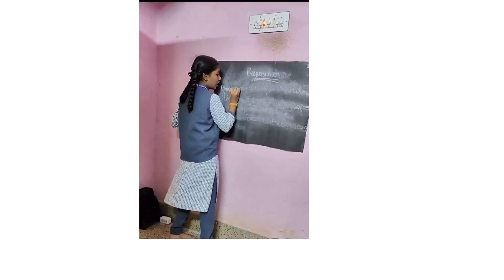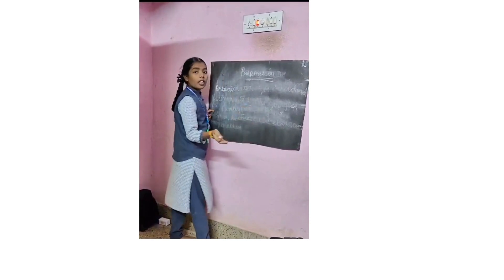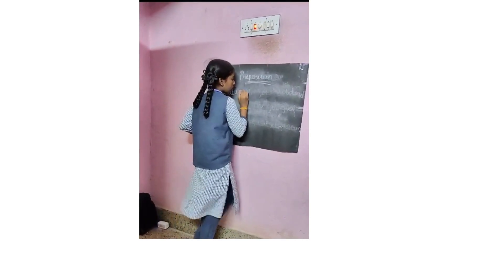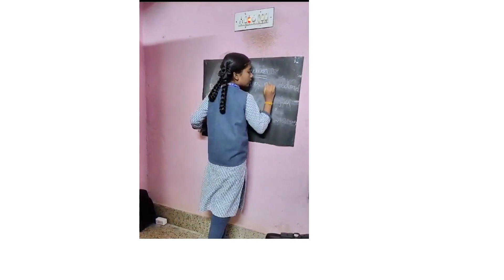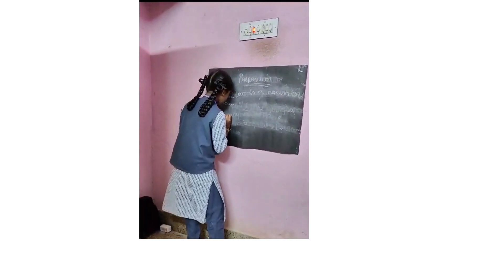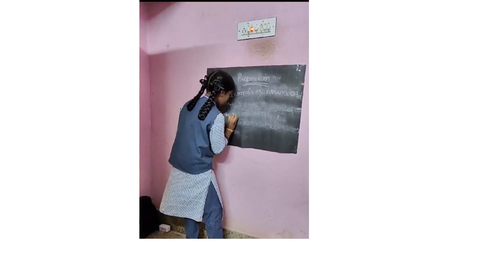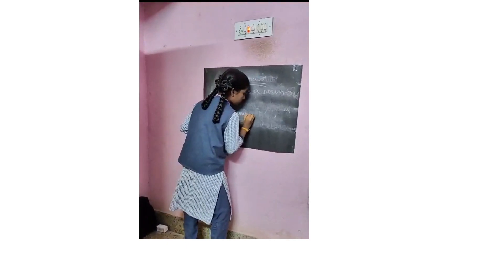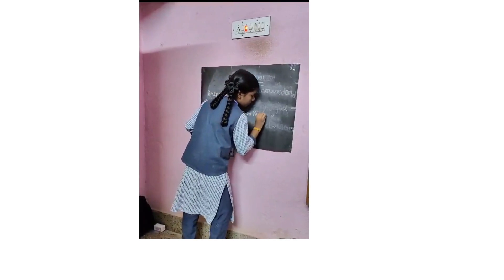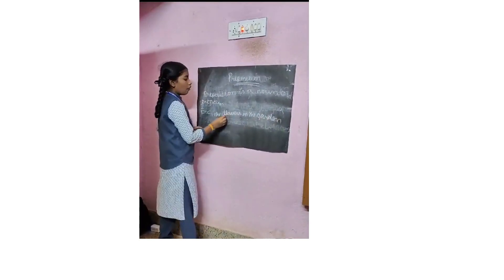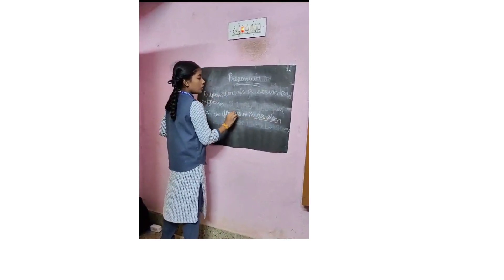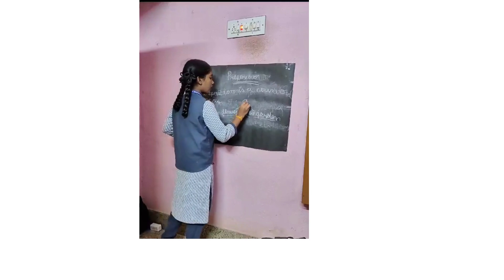Today we are talking about Preposition. The preposition is related to a noun. For example, the flower is in the garden. The flower is here and the garden is here. So, the word connecting them is 'in'. So, in is the Preposition.